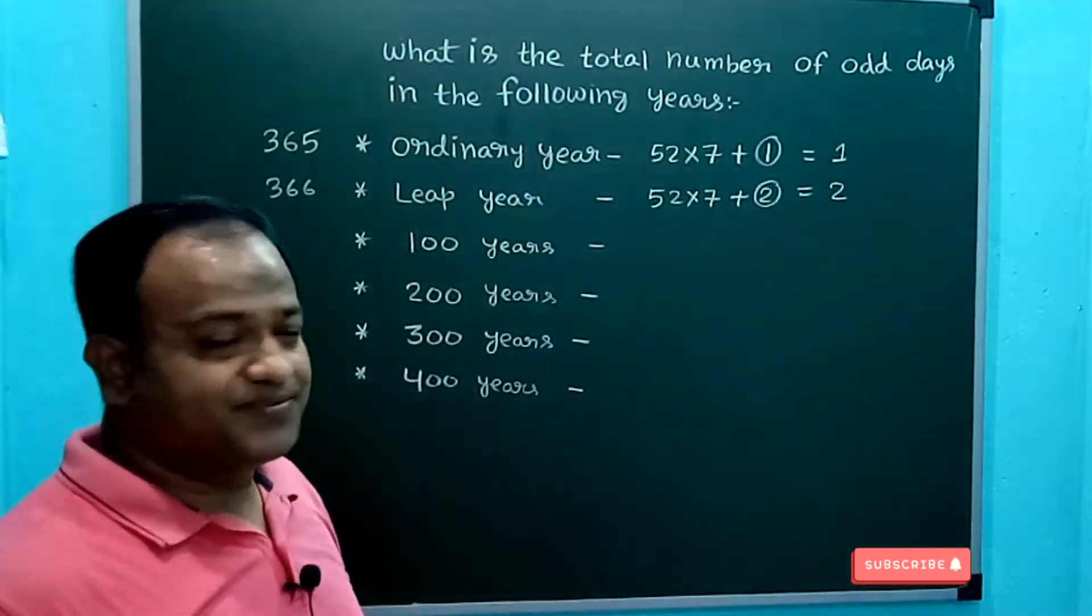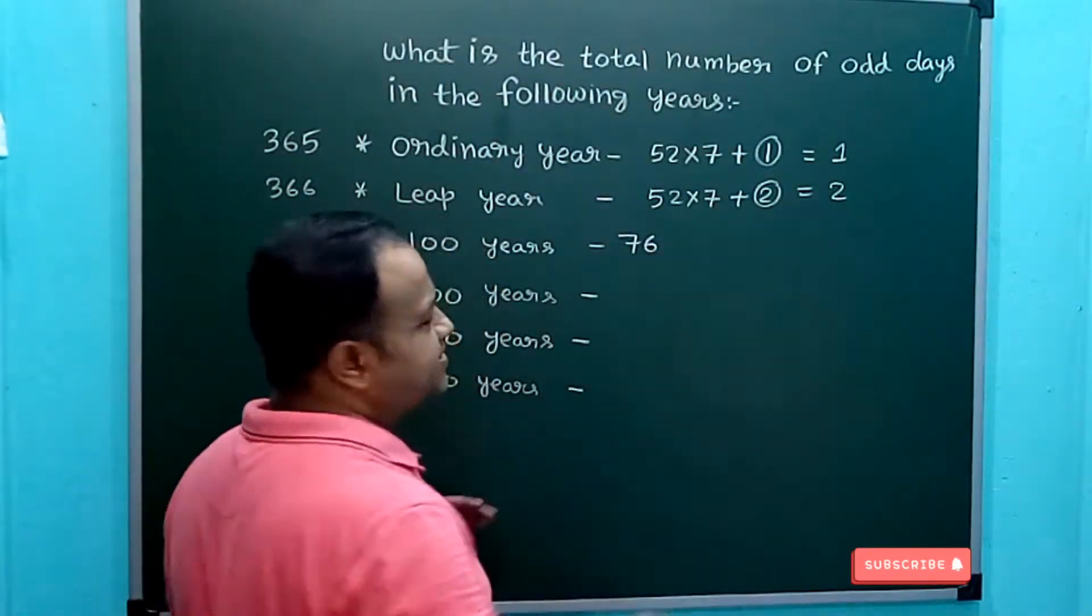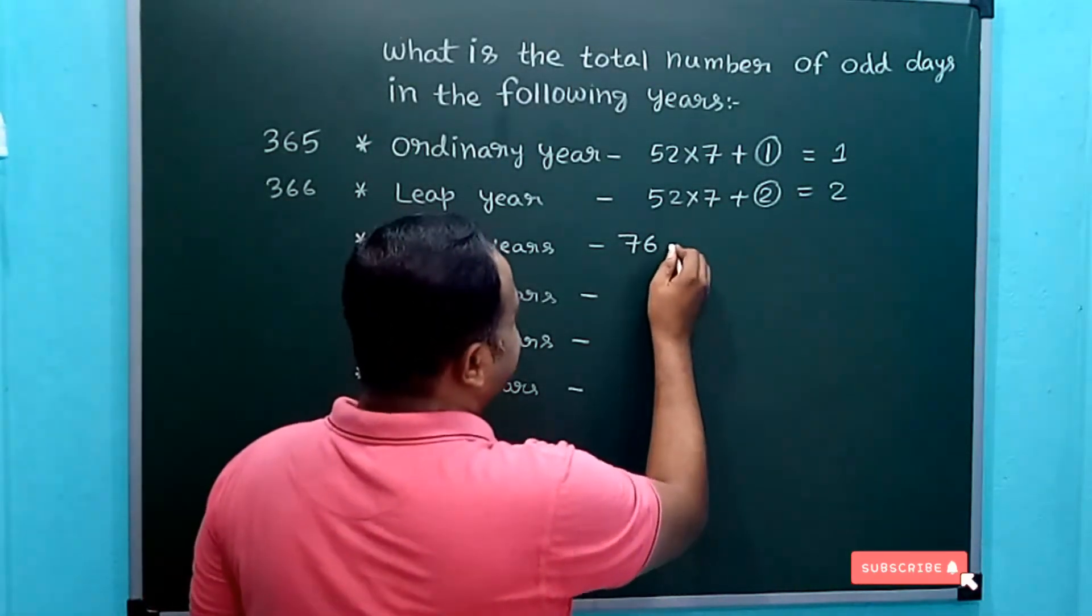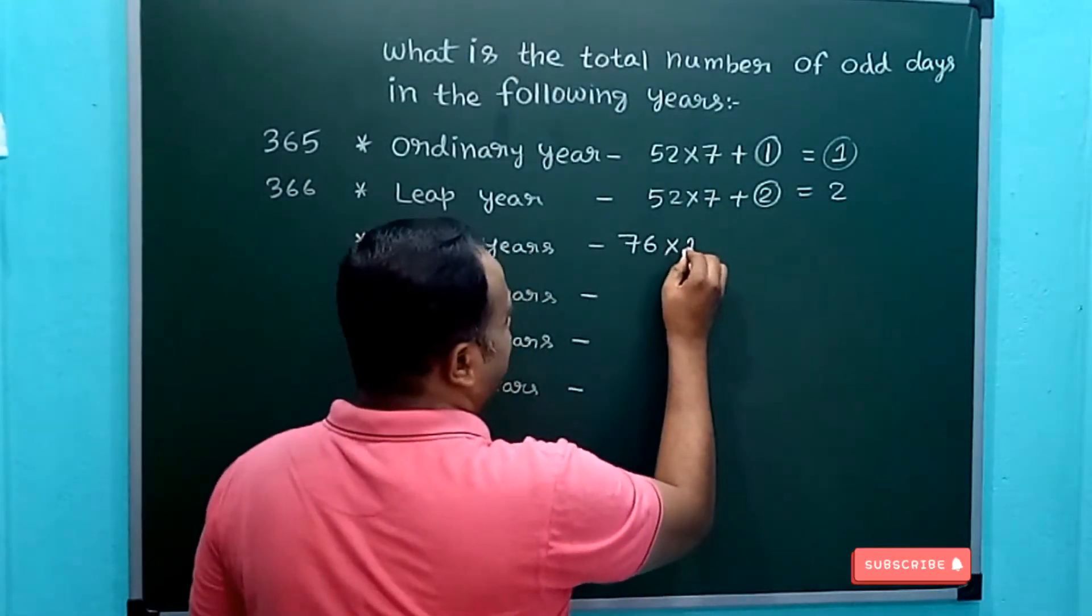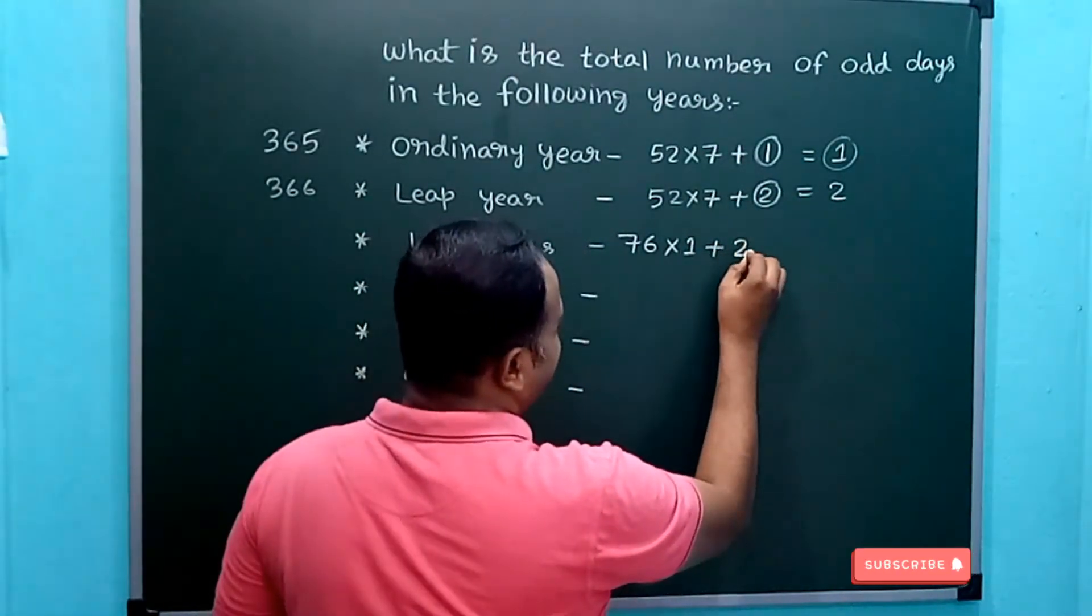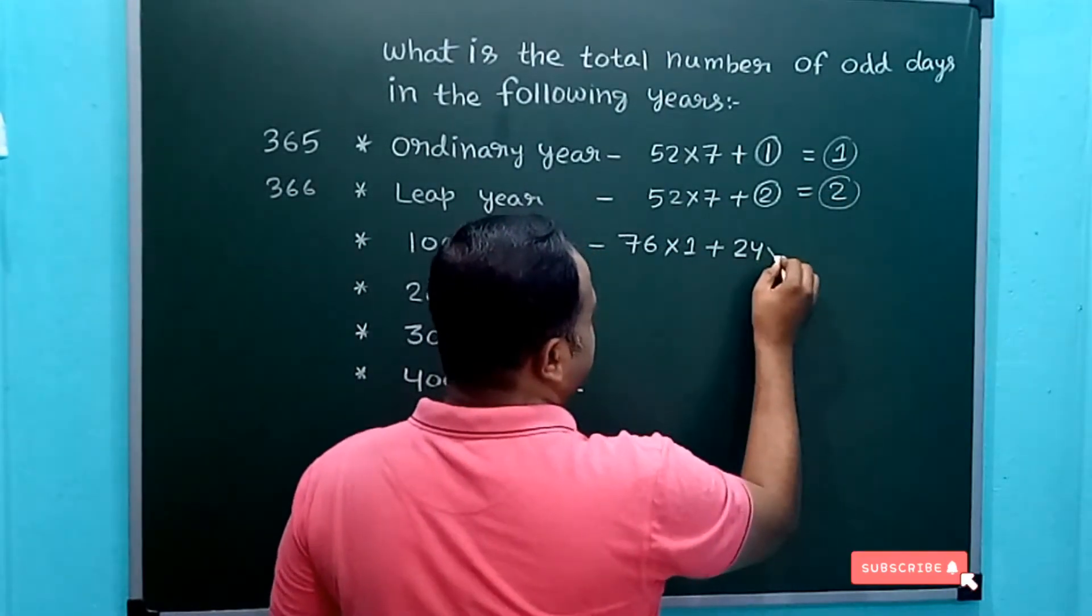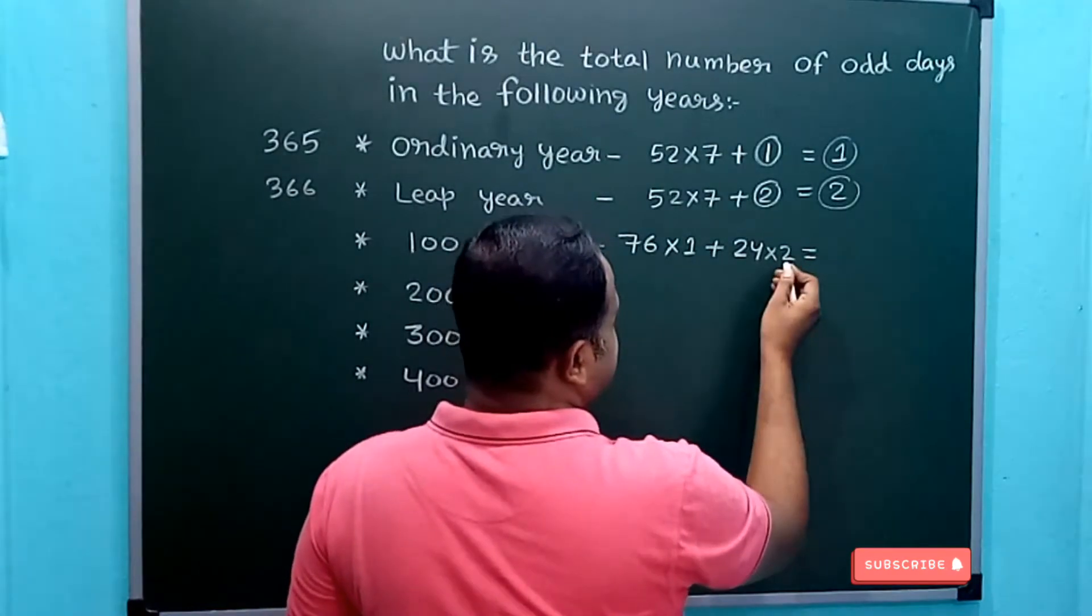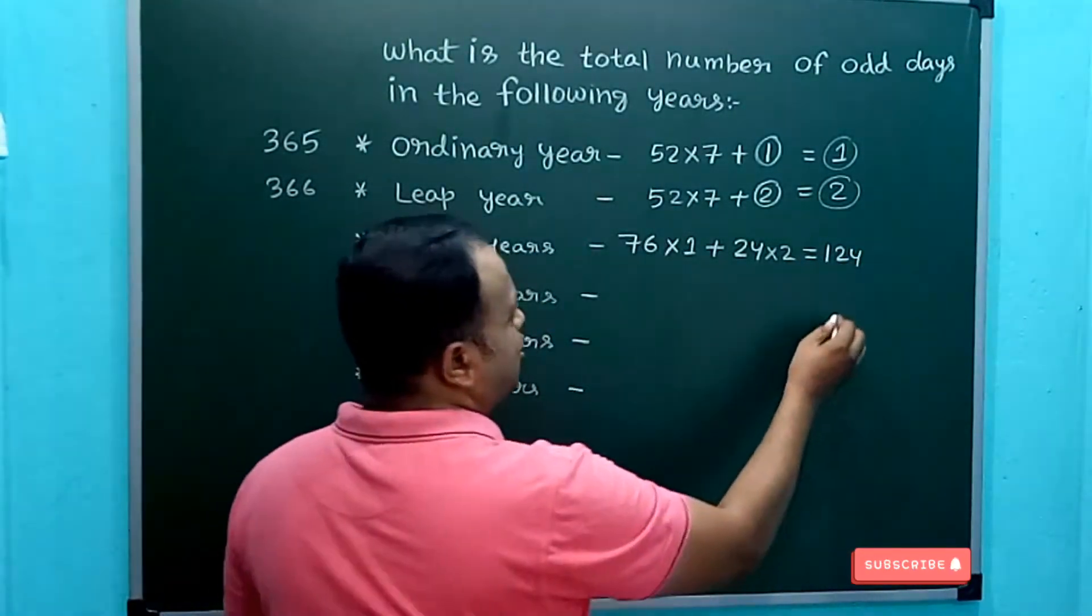Now in case of 100 years, 100 years has got 76 ordinary years and 24 leap years. 76 ordinary years means 76 × 1 odd day plus 24 × 2, which equals 76 + 48, that is 124 odd days.